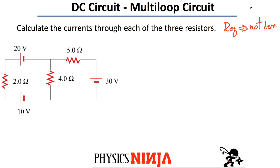In order to do that, I'm going to start by labeling all these points. I'm going to call them A, B, C, D, E, and F. I'm doing this because when I start doing loops, I just want to identify which loops I'm doing so we're very clear. Two of these points are actually junctions — I'm going to make point A and point D blue. At these points, I can apply what is called a junction rule.